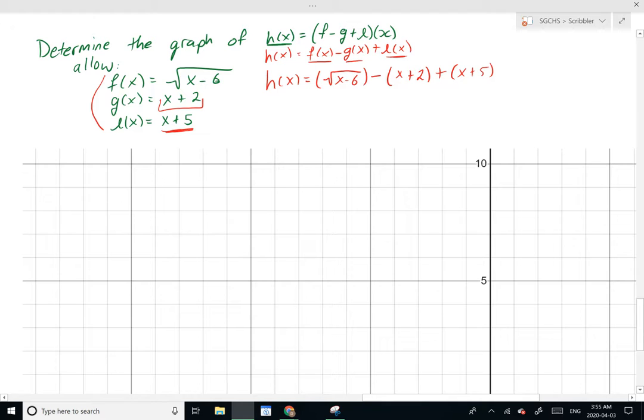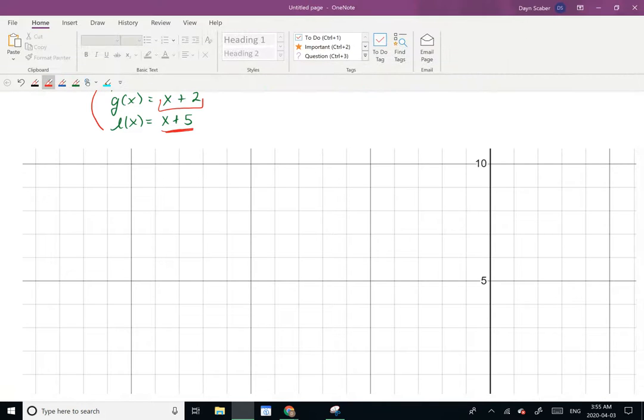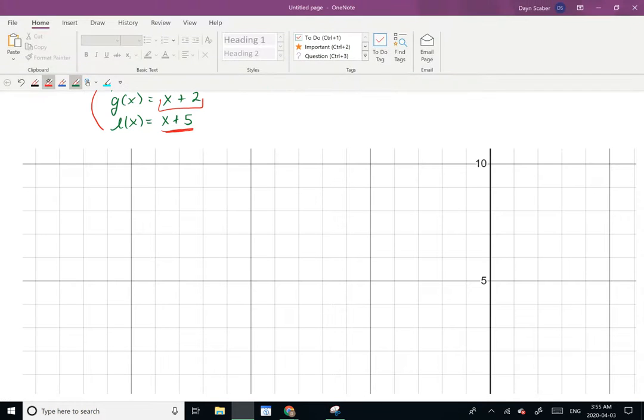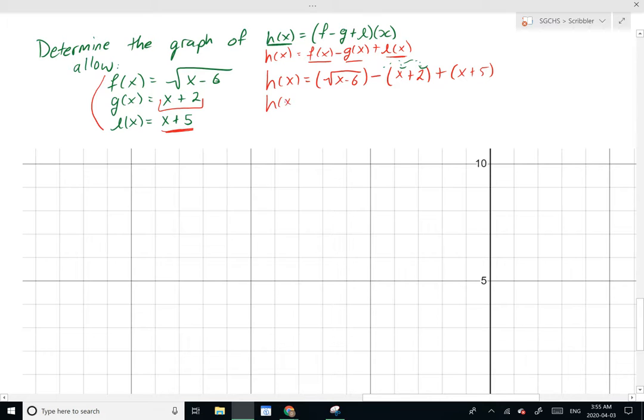Now at this point, I'm going to apply my negatives in there into the brackets so I can get rid of those brackets. Okay, so h(x) will equal the square root of x minus 6. And this will become negative 1 times x, which gives me negative x. Negative 1 times 2 gives me negative 2 plus x plus 5.